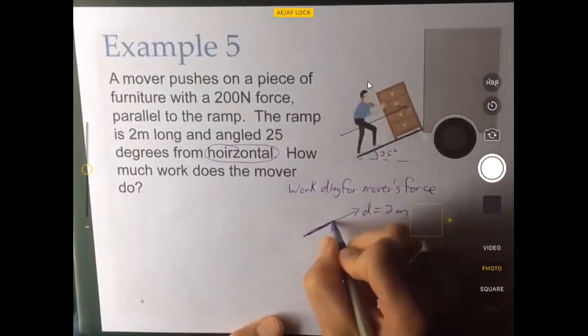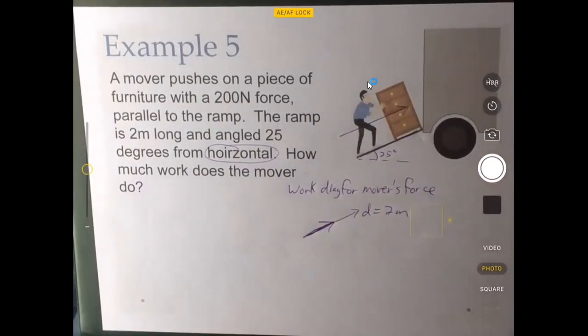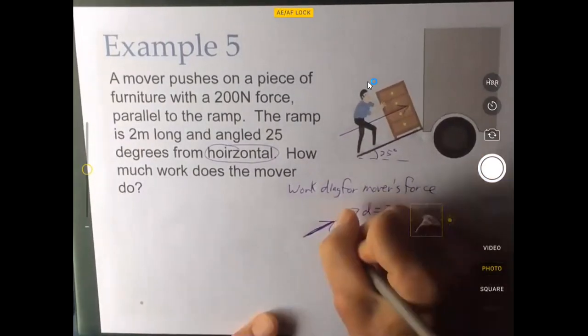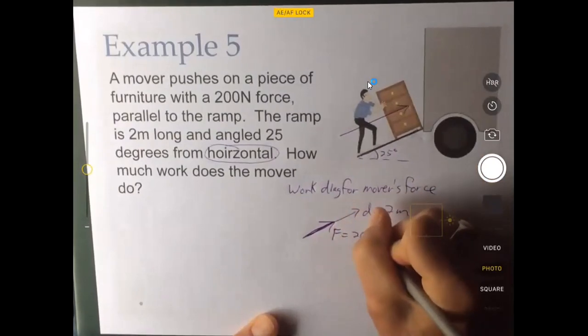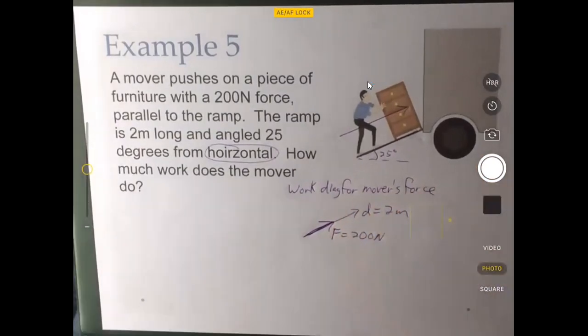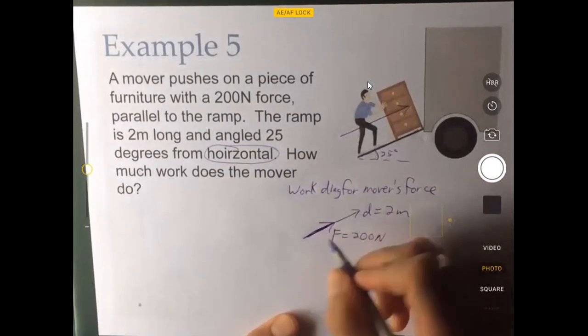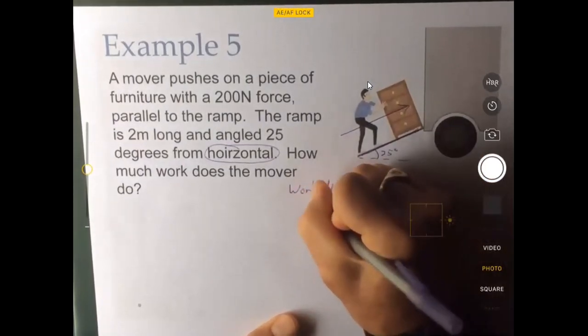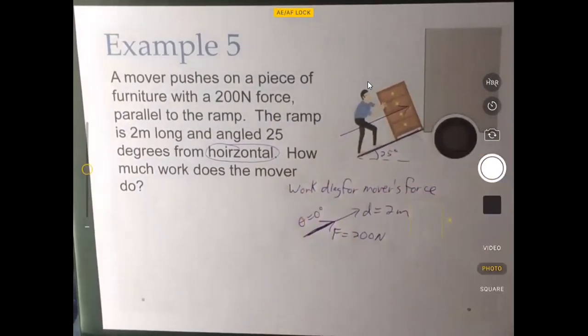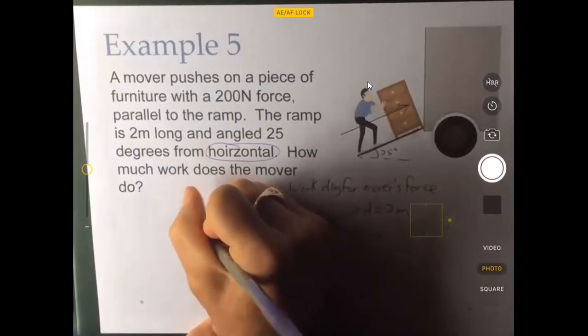So what is the angle between those two vectors? Is it a 25 degree angle? No, it is definitely not. The angle between this force and this displacement is zero degrees. And so now we can easily calculate the work.